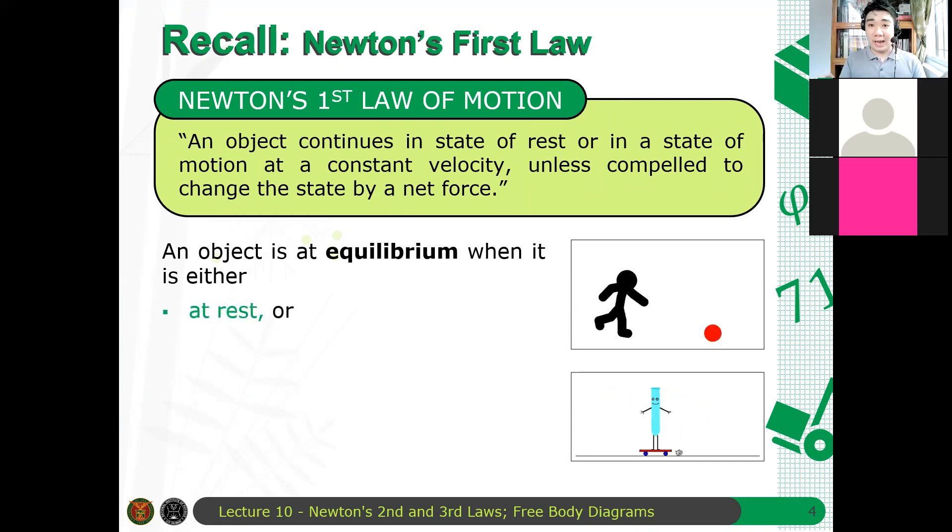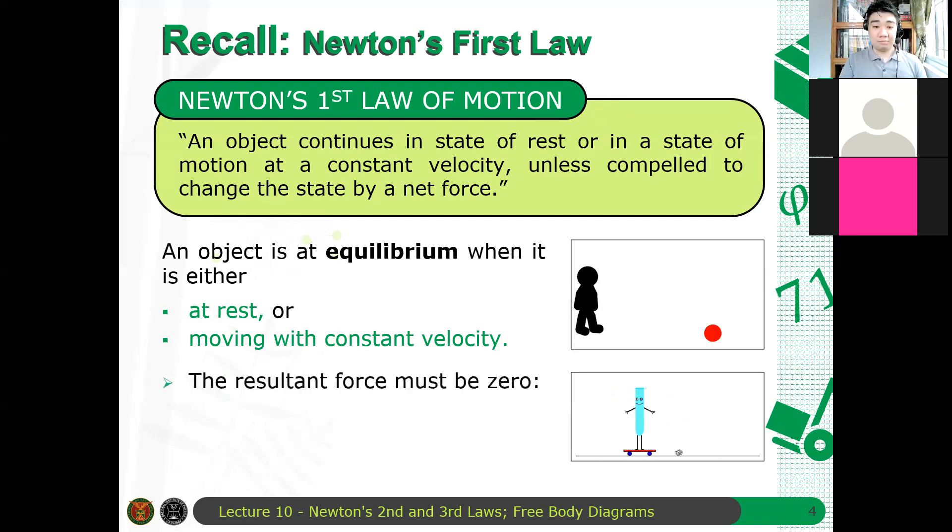Ang ibig sabihin nun, either nakahinto yung object o gumagalaw yung object with constant velocity or with constant speed along a straight line. Dapat hindi nag-accelerate, dapat hindi nagbabago yung direction nung galaw ng isang object. Once it changes direction, there will definitely be acceleration. So, again, the resultant forces be zero.